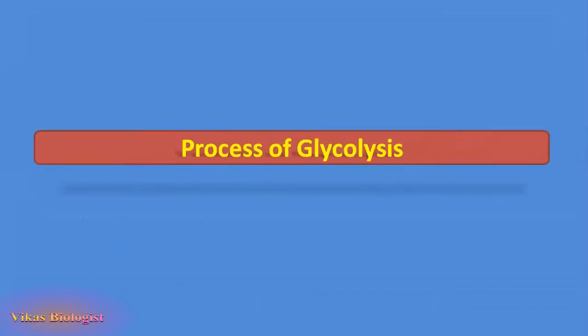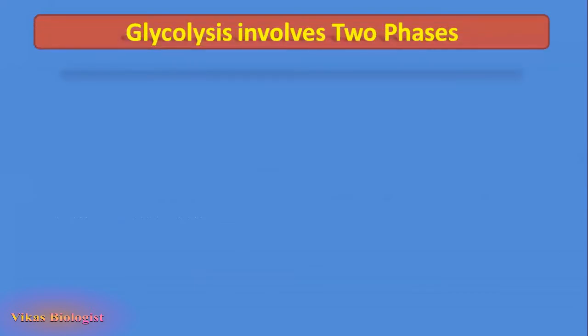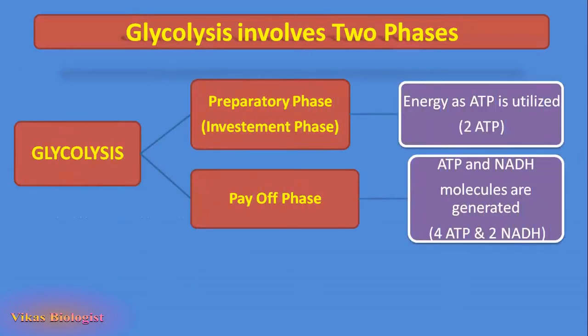Let us look into the process of glycolysis. Glycolysis includes two phases. First is the preparatory phase which is the investment phase, and the next phase is the payoff phase. The preparatory or investment phase is so called because energy in the form of ATP is utilized here. Two ATP are utilized in the preparatory phase. In the payoff phase, ATP and NADH molecules are generated. All together four ATP and two NADH are generated in this phase. Hence it is called the payoff phase.